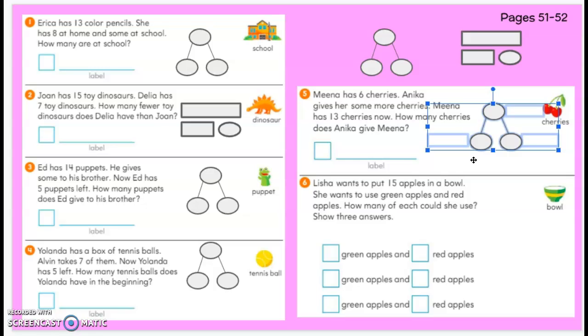I know some of you are thinking, Mina has six cherries. Does that sound like the total? No, it's one of the addends, right? Then she gets some more. So she has six. So label this has six.